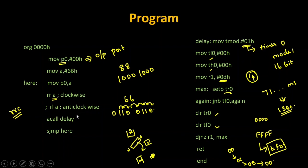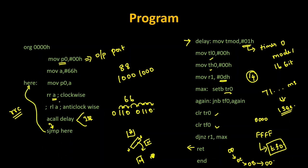The ACALL delay jumps to the delay subroutine, and upon finding RETURN, execution comes back to the next instruction. Then it loops back to the main label. With rotate right applied to 0x66 (binary 0110 0110), after one right rotation it becomes 0x33 (binary 0011 0011). After the next rotation it becomes 0x99 (binary 1001 1001). Like this, the poles keep shifting so the rotor takes the mid position between two north poles and two south poles in sequence.